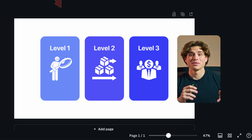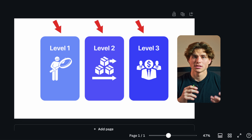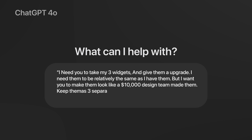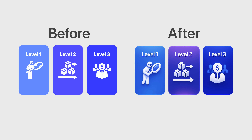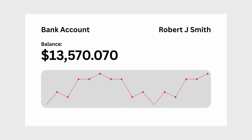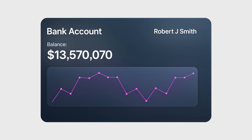We're back in Canva, and as you can see, I made these 3 simple widgets that can be used together. Here's the prompt: 'I need you to take my 3 widgets and give them an upgrade. I need them to be relatively the same as I have them, but I want you to make them look like a $10,000 design team made them. Keep them as three separate widgets.' Now, if your attention span can make it another 30 seconds, I'll shortly be explaining how I turn these into 3D elements. Let's do one more example, but this time of a bank account. Here's what I started with, and here's what it gave me. You get the point.